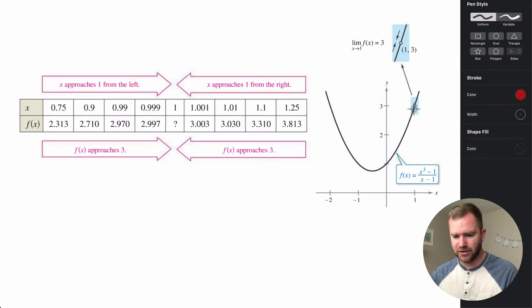we're getting this hole in our graph. So our function is not actually defined at x equals 1, but we want to know what its limit is. What value is this getting close to at x equals 1? We can look at this both numerically with a table of values and graphically.